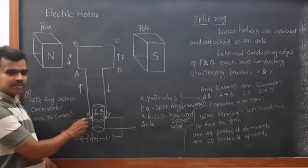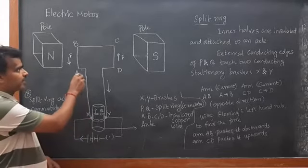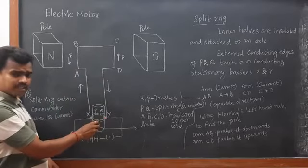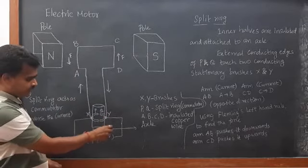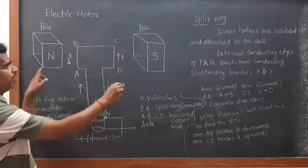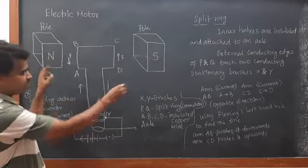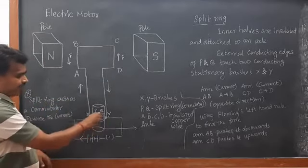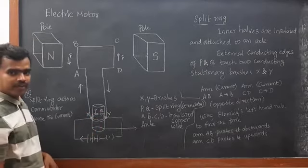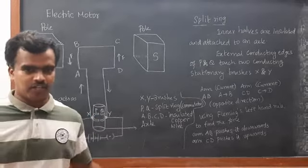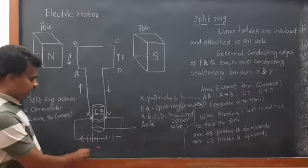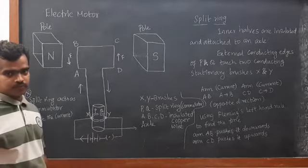From that battery, copper wire is connected. It passes through brush X, and then it passes through the rectangular copper coil. Then it comes back to brush X and reaches the negative terminal of the battery. So we have poles, magnets, the axle, and the split ring — or we can call it the commutator. Later I will tell you the role of the split ring commutator. And here we have the battery and the key.